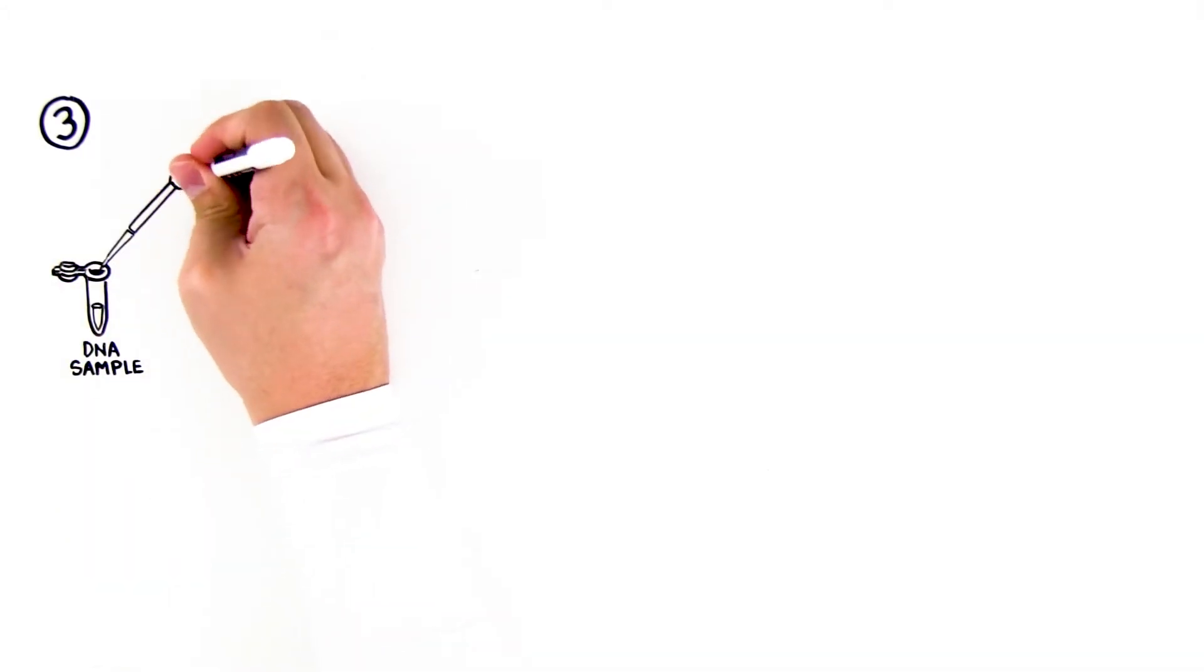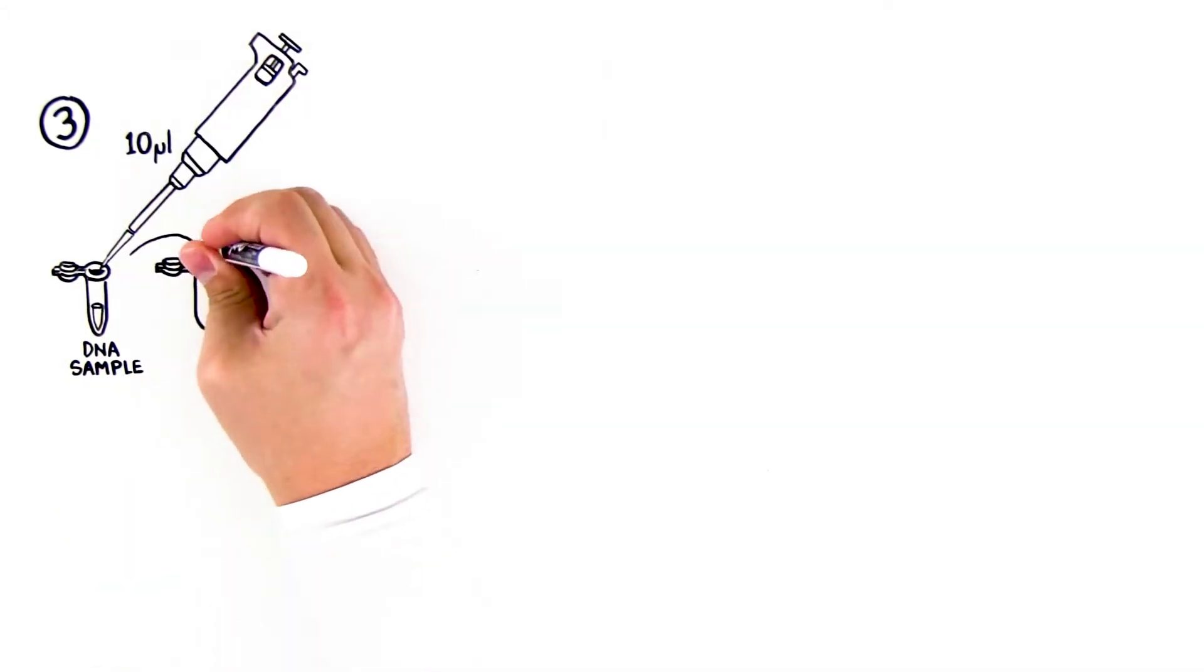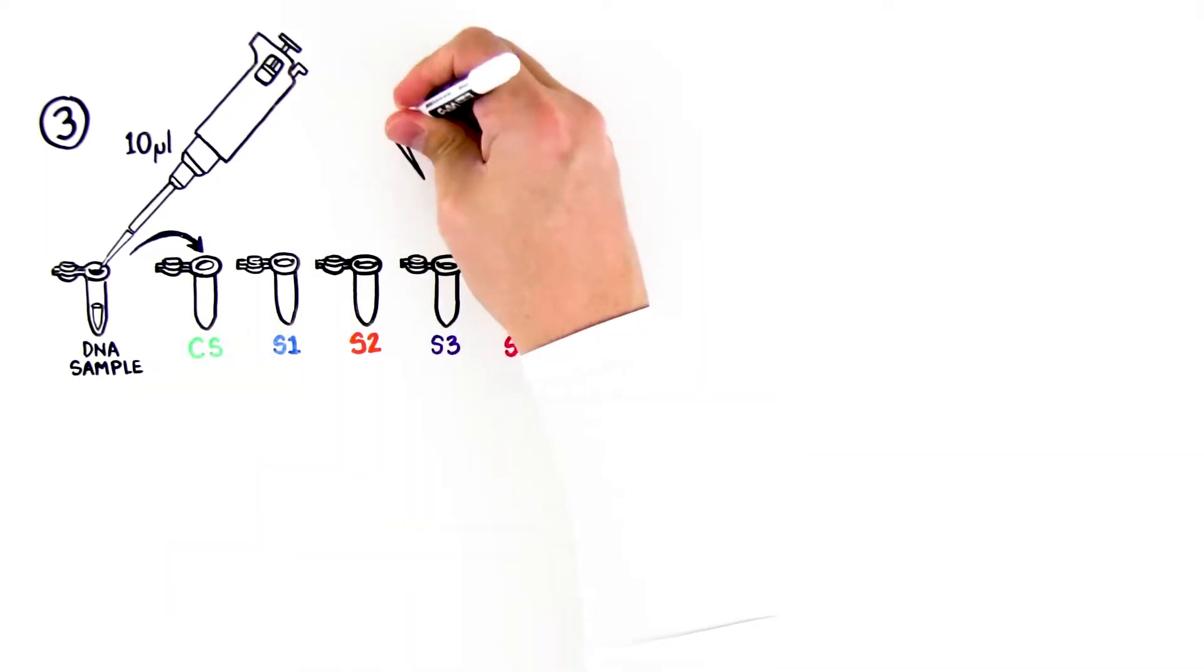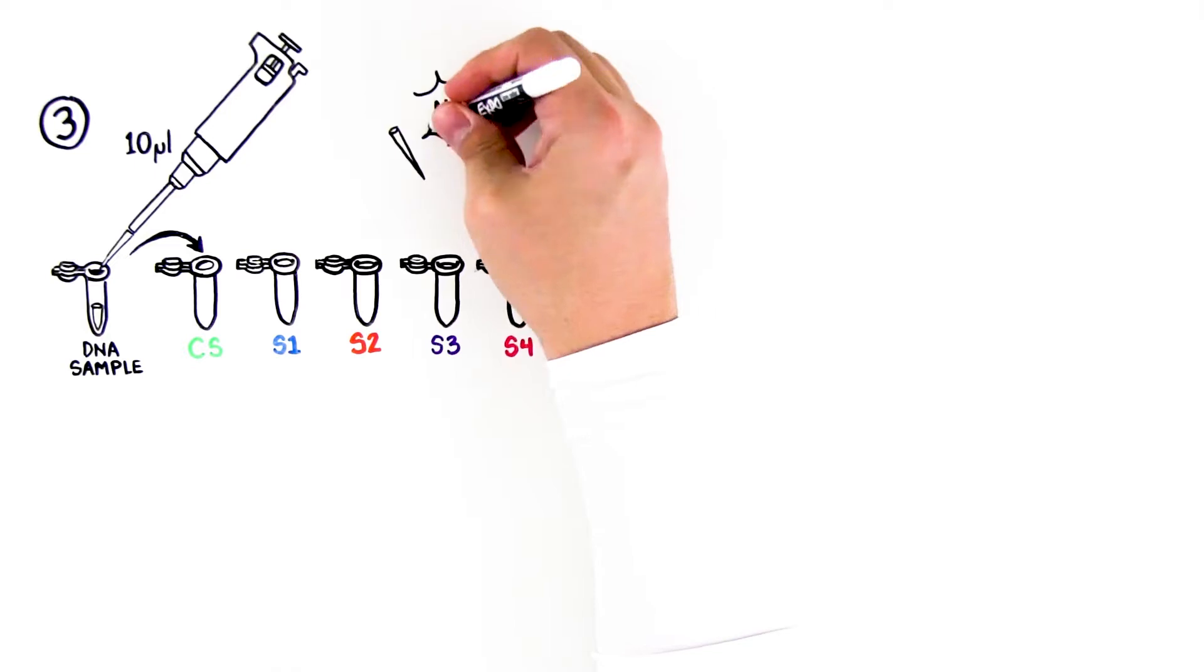Third, pipet 10 microliters of each DNA sample from the stock tubes and transfer to the corresponding colored microtubes. Use a new tip for each DNA sample. Make sure the sample is transferred to the bottom of the tubes.